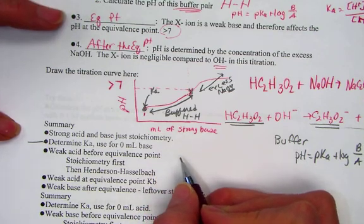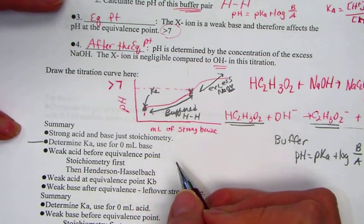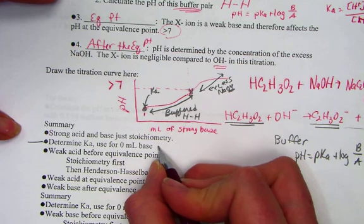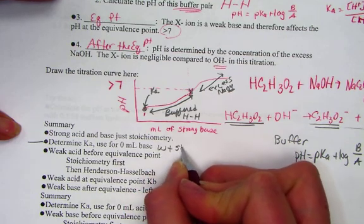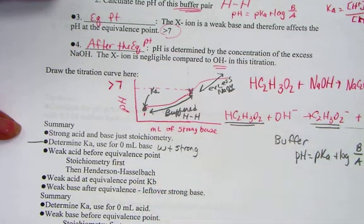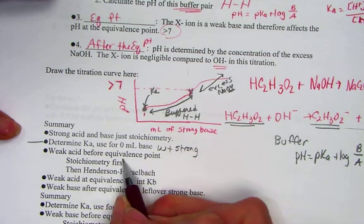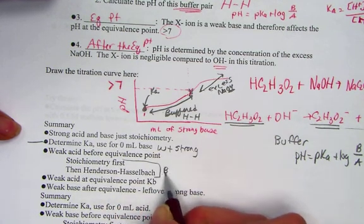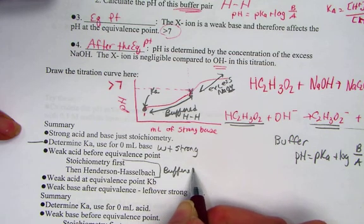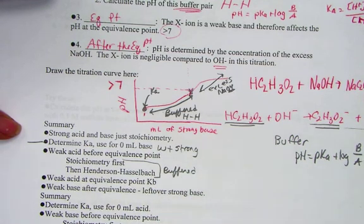However, if we have any other type, strong acid weak base or weak acid strong base, weak plus strong, we have to consider first the stoichiometry, then a Henderson-Hasselbalch. And I remember learning just in the buffer system, that's really nothing more than a buffered problem we had worked in the previous section.